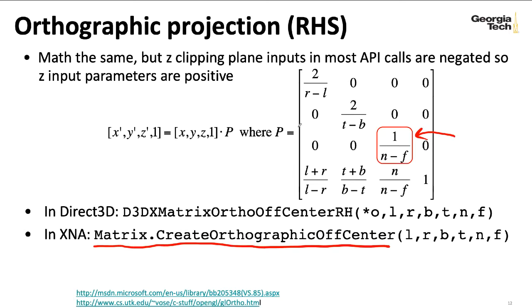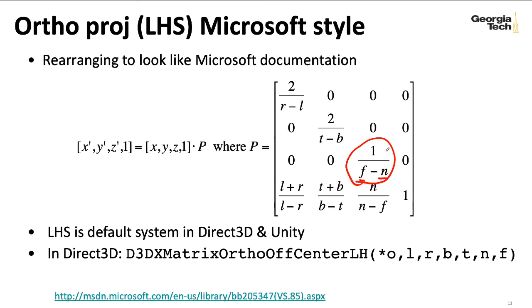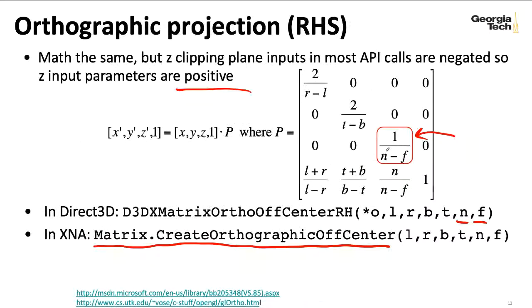Even if you're using a right-handed system where the near plane is minus 50 and the far plane is minus 100, these API calls expect your near and far planes to be listed as positive numbers. They essentially do that sign flip for you. That's why the left-handed version has F minus N in the denominator, and the right-handed version has N minus F. They've done a minus sign for you because they thought it would confuse people to have to put negative numbers in. Yes, that is confusing.